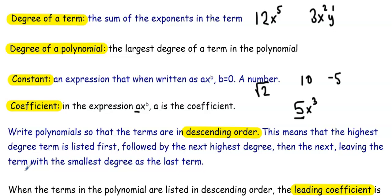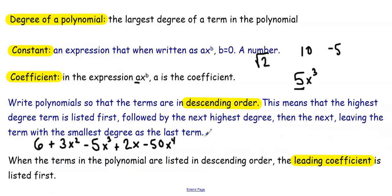So if we were given a polynomial, we would list these terms in descending order by starting with the term with the highest degree. That would be this one right here because it has a degree of 4. I would list that as -50x⁴. Then I would move on to the next highest degree, so -5x³, then +3x², then +2x, and then finally +6.